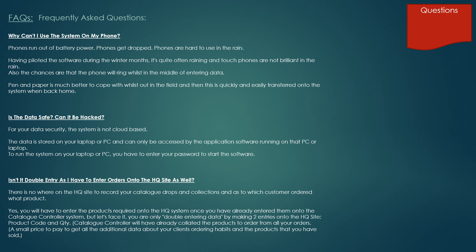Isn't it double-entry, as I have to enter orders onto the HQ site as well? Well, there's nowhere on the HQ site to record your catalogue drops and collections and which customer ordered what product. Yes, you'll have to enter the products required onto the HQ system once you've already entered them onto the Catalogue Controller system, but you're only double-entering data by making two entries onto the HQ site — the product code and the quantity. The Catalogue Controller will have already collated the products to order from all of your orders. A small price to pay to get all the additional information about your clients' ordering habits and the products that you have stocked.